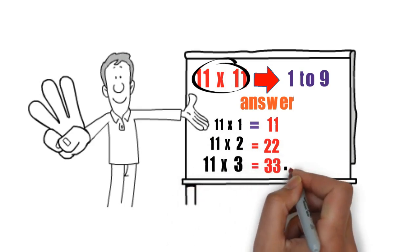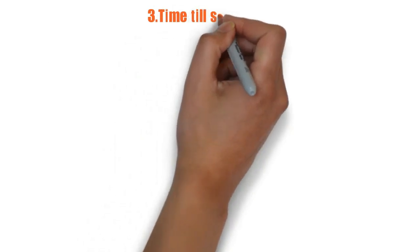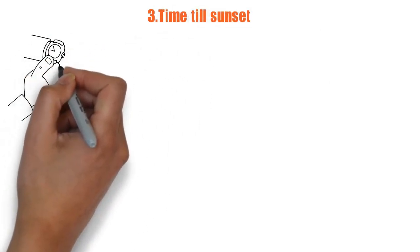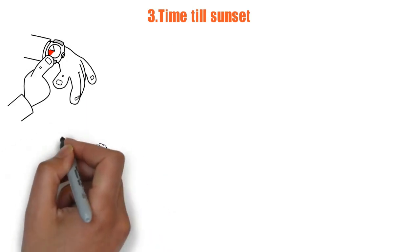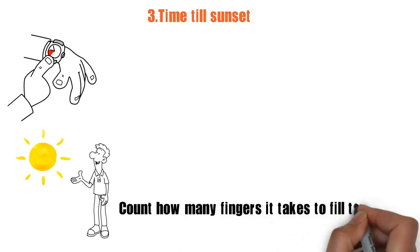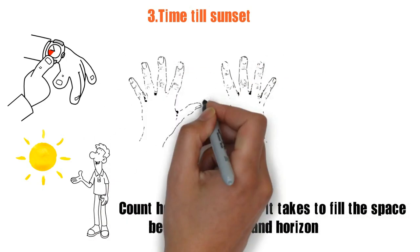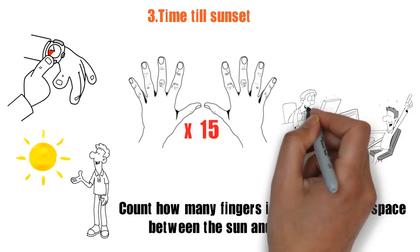3. Time till sunset. If you need a quick estimate of how much time you have before sunset, place your fingers under the sun. Count how many fingers it takes to fill the space between the sun and the horizon, then multiply the number of fingers by 15. This gives you how much time you have in minutes.